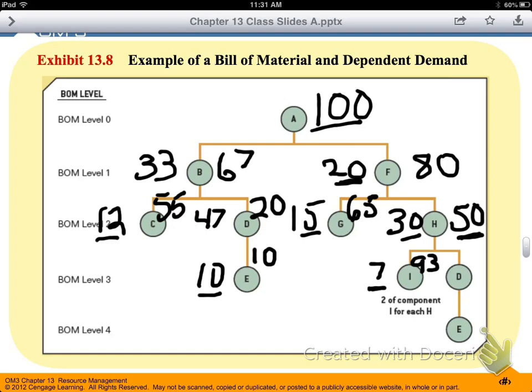Now, when we get to the D and E here, we also had D and E over here. But in order to satisfy this demand of 67, we've already used up our 47 and our 10. So essentially, we have 0 on hand for either of these, so we need to produce 50 of each of these items as well.